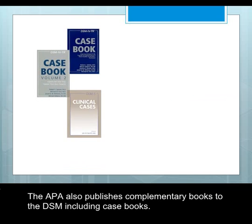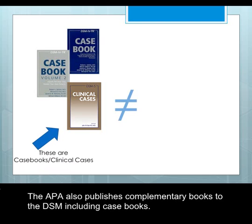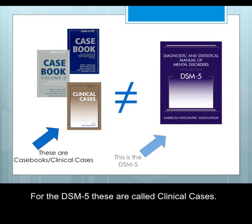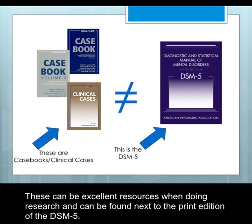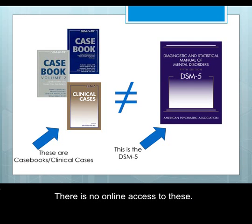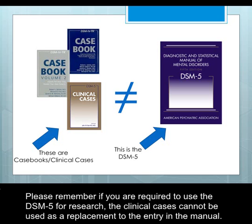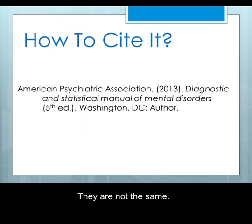The APA also publishes complimentary books to the DSM, including case books. For the DSM-5, these are called clinical cases. Clinical cases provide case studies for the different disorders explaining how a particular patient was diagnosed and treated. These can be excellent resources when doing research and can be found next to the print edition of the DSM-5. There is no online access to these. Please remember, if you are required to use the DSM-5 for research, the clinical cases cannot be used as a replacement to the entry in the manual — they are not the same.